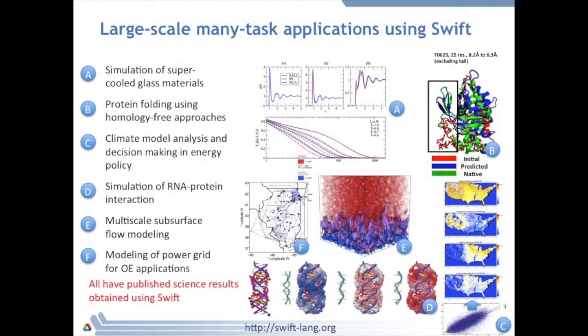Swift has been applied to studies of glassy materials, protein structure prediction, subsurface modeling—that's the red and blue picture in the middle—modeling of the power grid supply and demand, economic models and reliability models. Here in Chicago, the RIDCEP project and related projects are doing modeling of global food supply with economic factors. It's been applied to biomolecule interaction and protein-RNA interaction modeling done by people in Token Soskic's group.